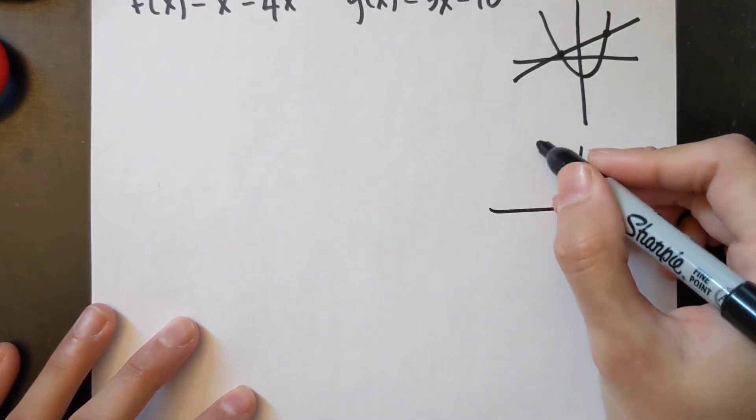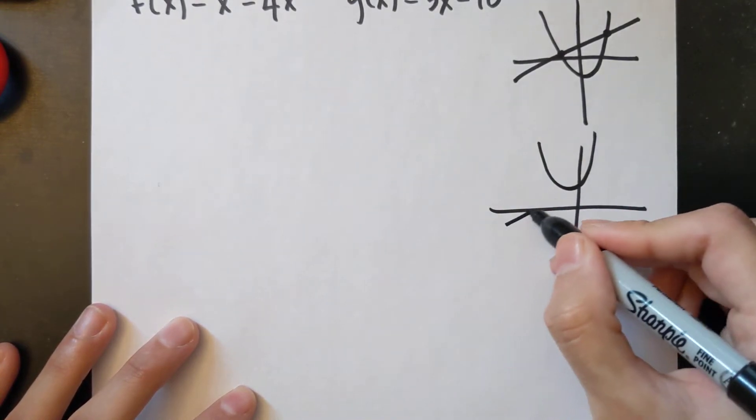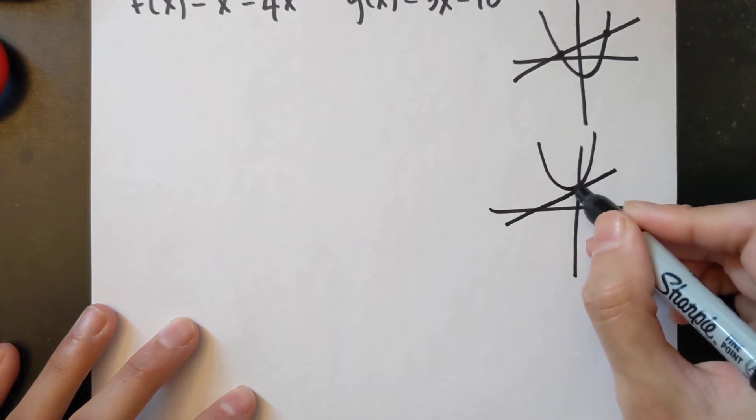I can also have a quadratic function like this and then a linear function like this and there's only one point of intersection.